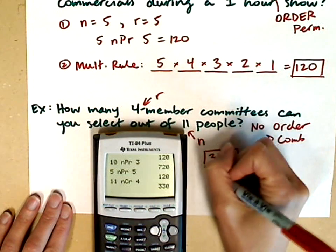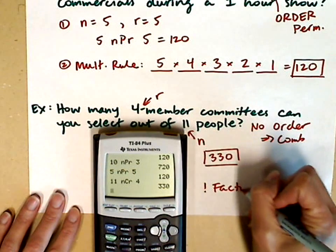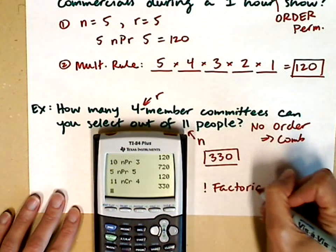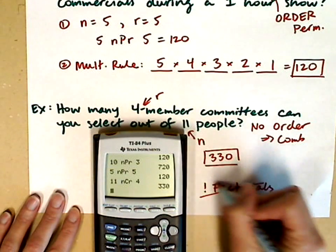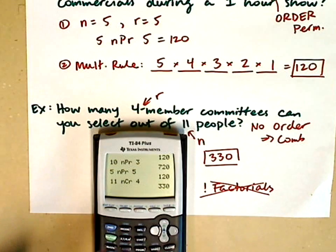Your book gives you the formulas for these. The formulas include factorials, which is the exclamation point. You do not need to know any of the formulas. You can do all of the permutations and combinations with your calculator.